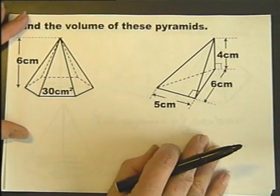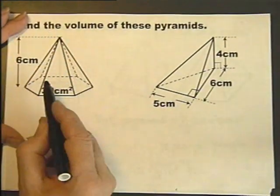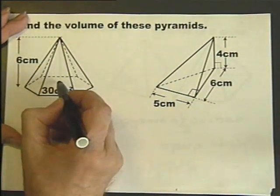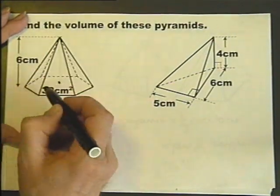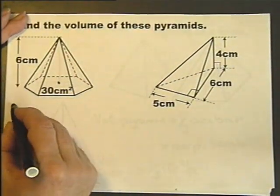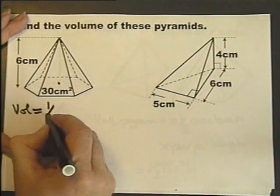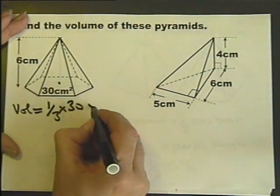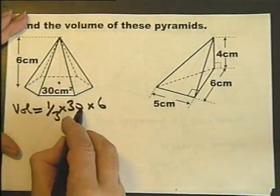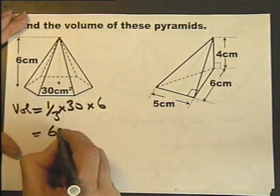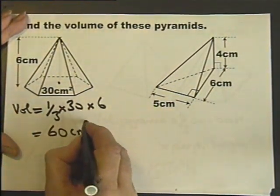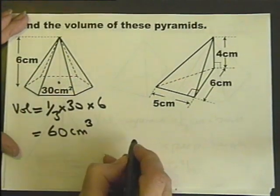Find the volume of these pyramids. So here we've got a hexagonal-based pyramid, we've got the vertical height is 6, and the area of the base is 30. So the volume is a third, the area of the base, times the height. So a third of that is 10, 10 times 6 is 60. And that will be cubic centimeters for volume.